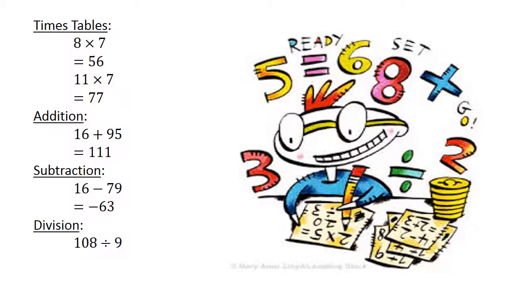108 divided by 9 equals 12. Square numbers.